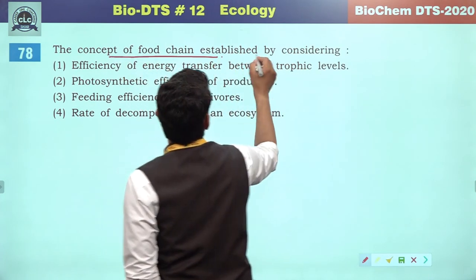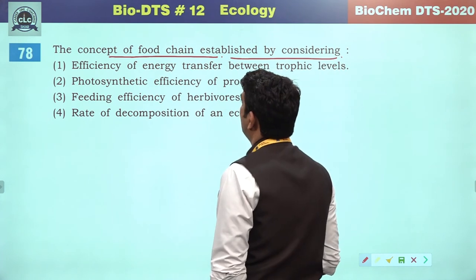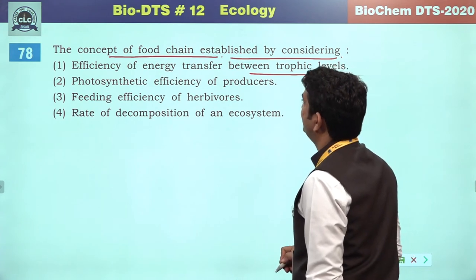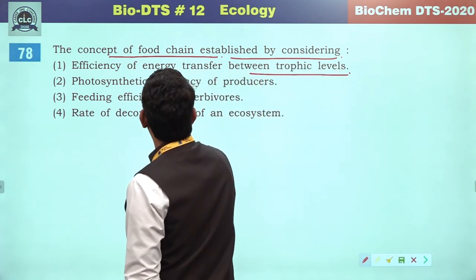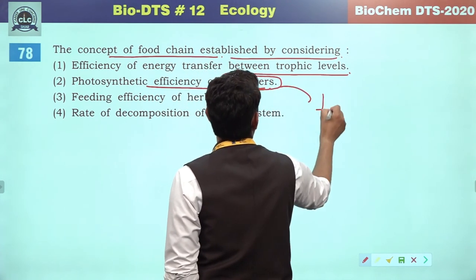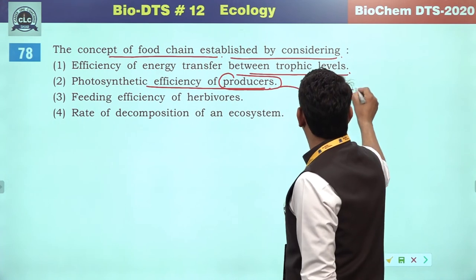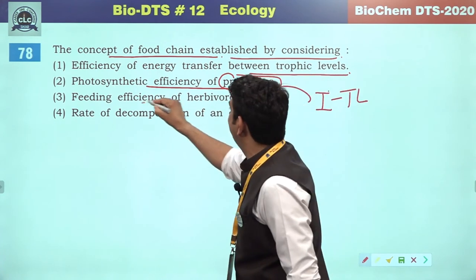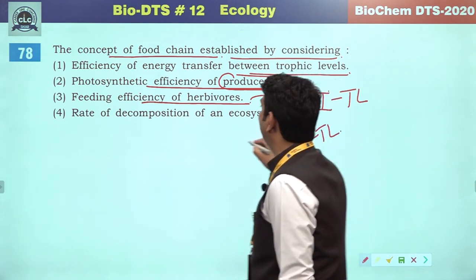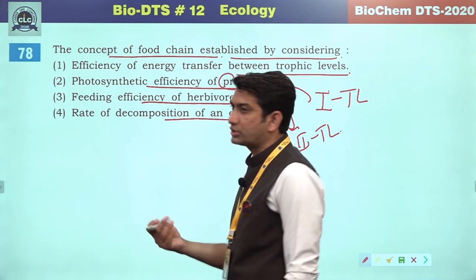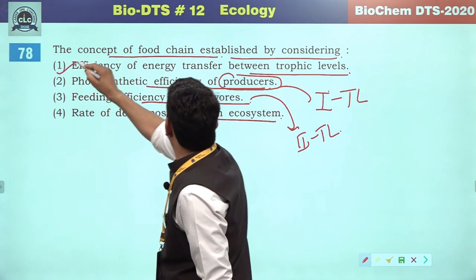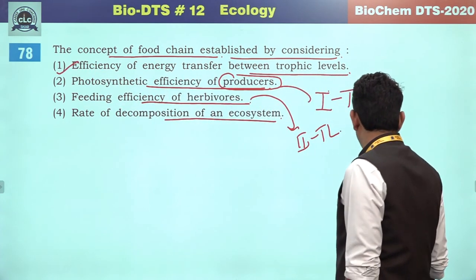The concept of food chain is established by considering the efficiency of energy transfer between trophic levels. Photosynthetic efficiency of producers addresses only the first trophic level. Feeding efficiency of herbivores addresses the second trophic level. Rate of decomposition addresses every trophic level activity. The food chain is established considering efficiency of energy transfer between trophic levels.